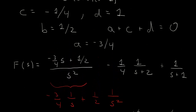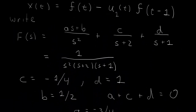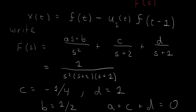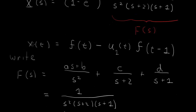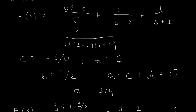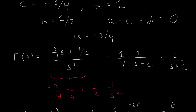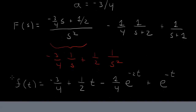So that's our solution. x of t equals F of t minus the Heaviside step function at 1 times F of t minus 1, where F of t is the expression we just found. That completes the solution.